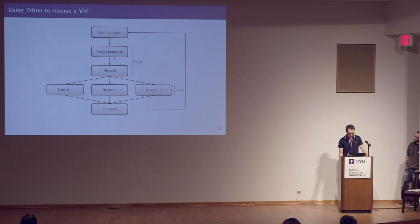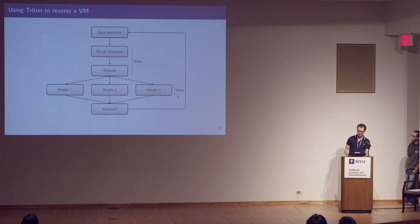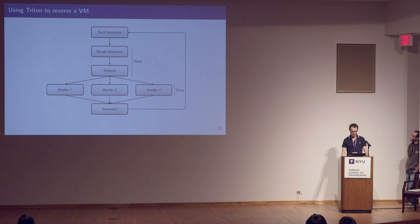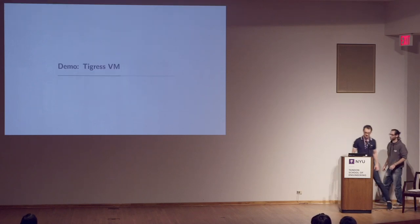Triton can help us reverse this kind of obfuscation at two levels. The first level is on the handler by using the taint engine and the symbolic engine, which will be the first demo by Jonathan. We can also use the symbolic engine of Triton to reverse the fetch and dispatch blocks, which will be the second demo. Now Jonathan will talk about the Tigress challenge.